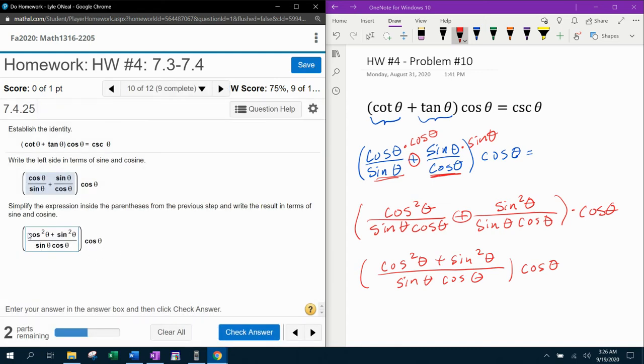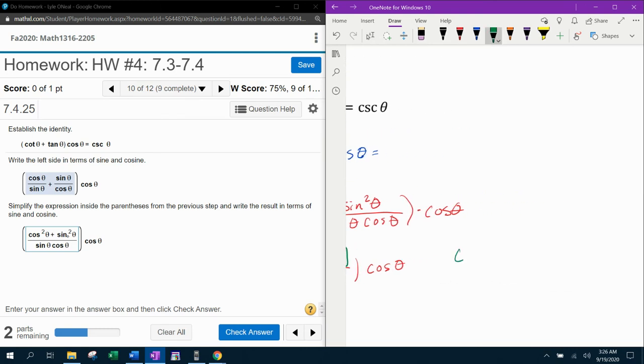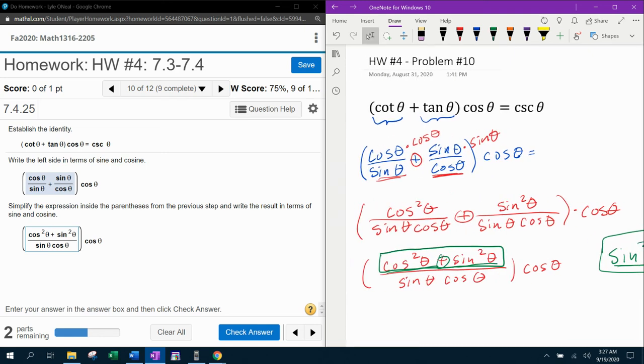See, they actually wanted me to go ahead and use the Pythagorean identity and simplify this further. So to show that step right here, I know that anytime I have sine squared theta plus cosine squared theta, the Pythagorean identity I'm referring to is sine squared theta plus cosine squared theta equals one. That's a Pythagorean identity that you should know.